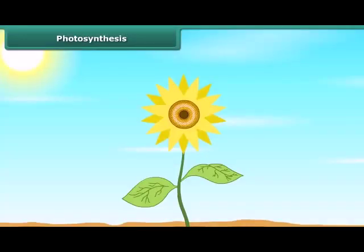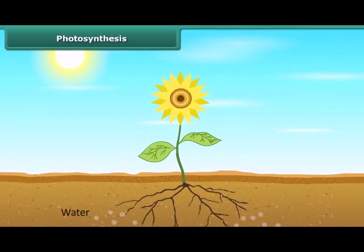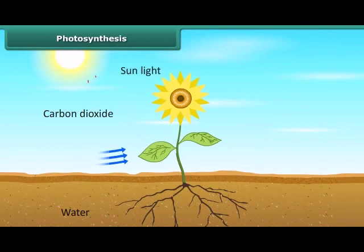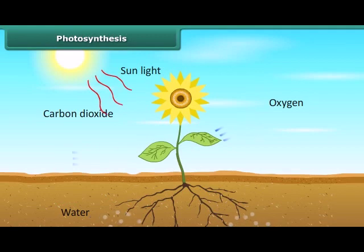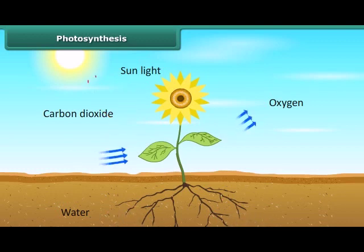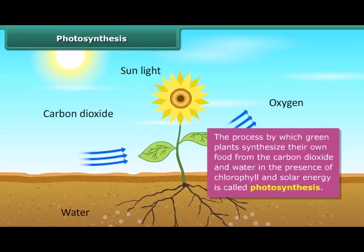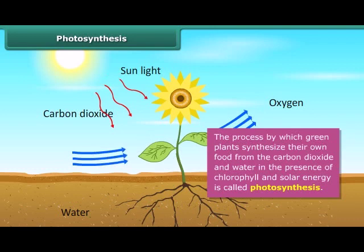As we know, green plants synthesize their own food. But do you also know how they synthesize their own food? Actually, green plants make their own food by the process of photosynthesis. Photosynthesis is a process by which green plants synthesize their own food from carbon dioxide and water in the presence of chlorophyll and solar energy.